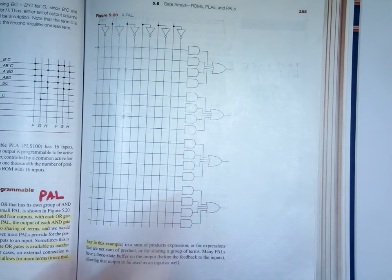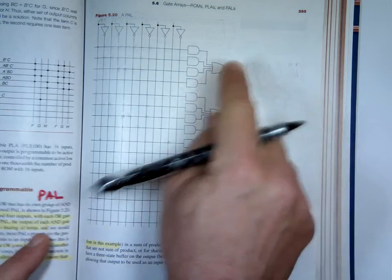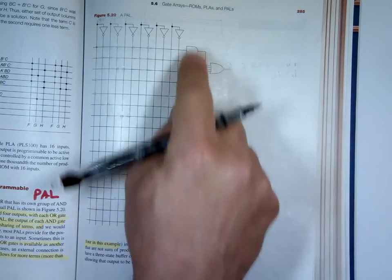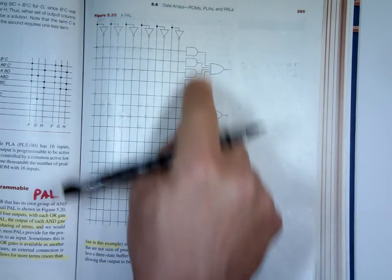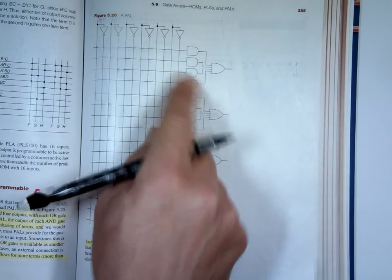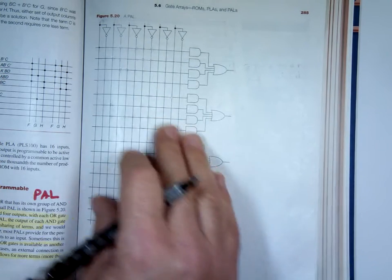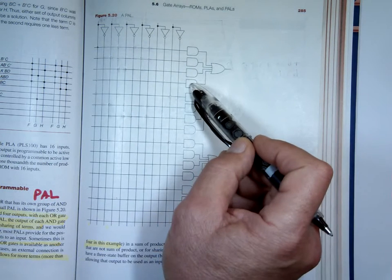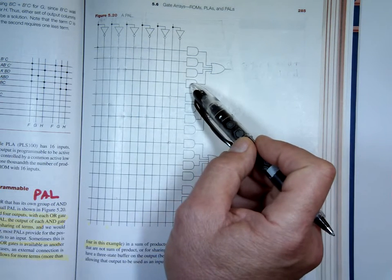So at this particular one, there are six inputs and four outputs. With each OR gate here having four inputs go into it. You might not need all four, so if you end up using one of these and you only need three of them, you might have one empty one.